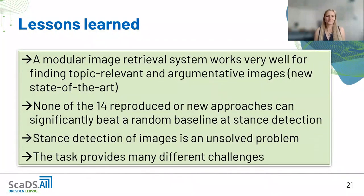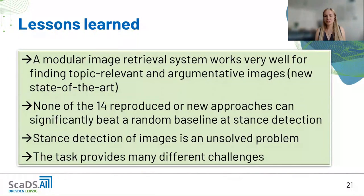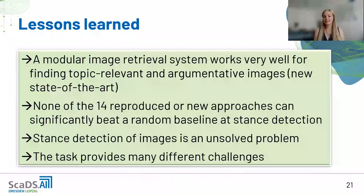In summary, we learned that a modular image retrieval system works very well for finding topic-relevant and argumentative images. However, none of the 14 reproduced or new approaches can significantly beat a random baseline at stance detection — it therefore remains an unsolved problem. We also found that this task presents many different challenges that need to be addressed first in order to solve stance detection. Thank you for watching.